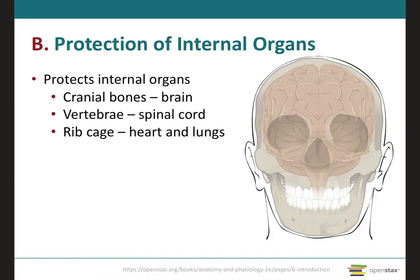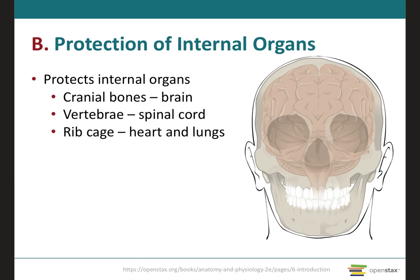With regards to protection of internal organs, the cranial bones protect the brain. The vertebrae have a central canal in the middle that houses the spinal cord and therefore protects it. The rib cage protects the thoracic cavity, which contains the heart and the lungs. So the skeleton protects the most important internal organs from injury: the brain, the spinal cord, the heart, and the lungs.